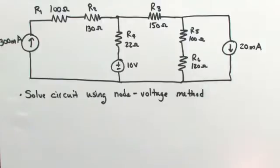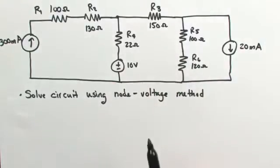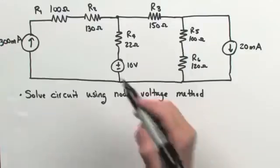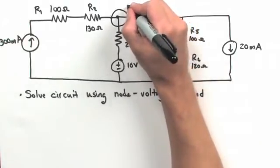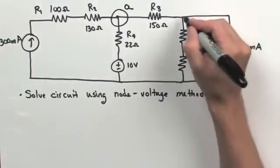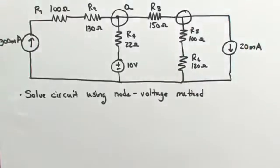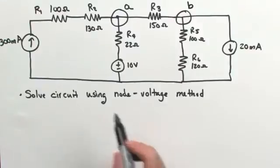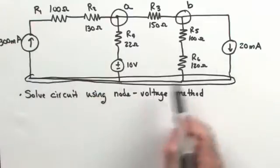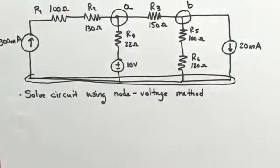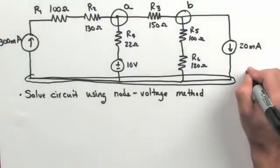The first step of the node voltage method is to identify the essential nodes of the circuit. Remember that essential nodes are connections of three or more elements. Going through the circuit diagram, I see a connection of three elements here — I'm going to call that node A. Right here I have another connection of more than two elements — I'll call that node B. And right here I have my current supplies, voltage supply, and resistor R6 all connected to the same point — I'm going to call that node C.